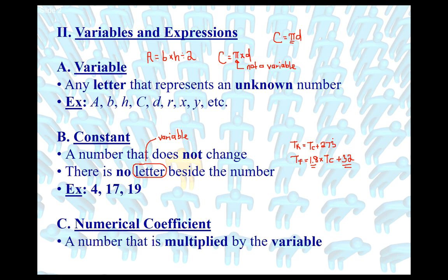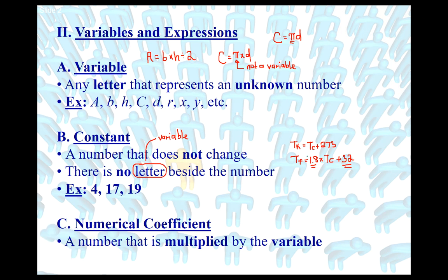A numerical coefficient is a number that is multiplied — or it can actually be divided — by the variable. In the circumference equation, pi is being multiplied by the variable d, so we call it a numerical coefficient. In the Fahrenheit equation, 1.8 is being multiplied by the variable Tc, so that would also be a numerical coefficient. If a number is attached through multiplication or division, it's a numerical coefficient; if it's attached through addition or subtraction, it's a constant.